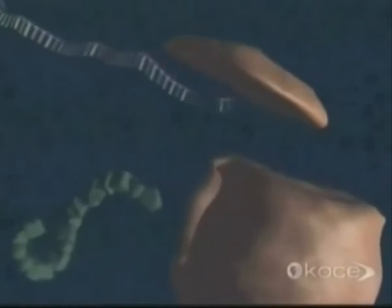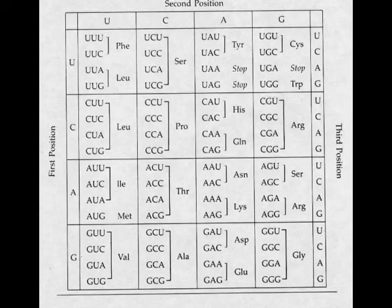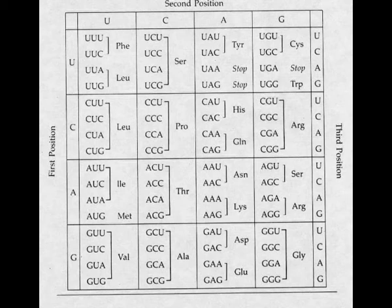The ribosome continuously translates that transcript and forms a polypeptide, and it keeps doing that until it actually stops translating. Once again on your screens is the codon chart — have a look through and see if you can figure out what codons might cause the ribosome to stop translating the RNA transcript. There are three potential codons that cause the ribosome to stop: if it reads UAA it will stop, if it reads UAG it will stop, or if it reads UGA it will stop. Those codons are in the top two boxes in the top right-hand corner of the table. So UAA, UAG, and UGA — when the ribosome reads any of those three codons, that's when it knows it needs to stop translation and then releases the polypeptide.